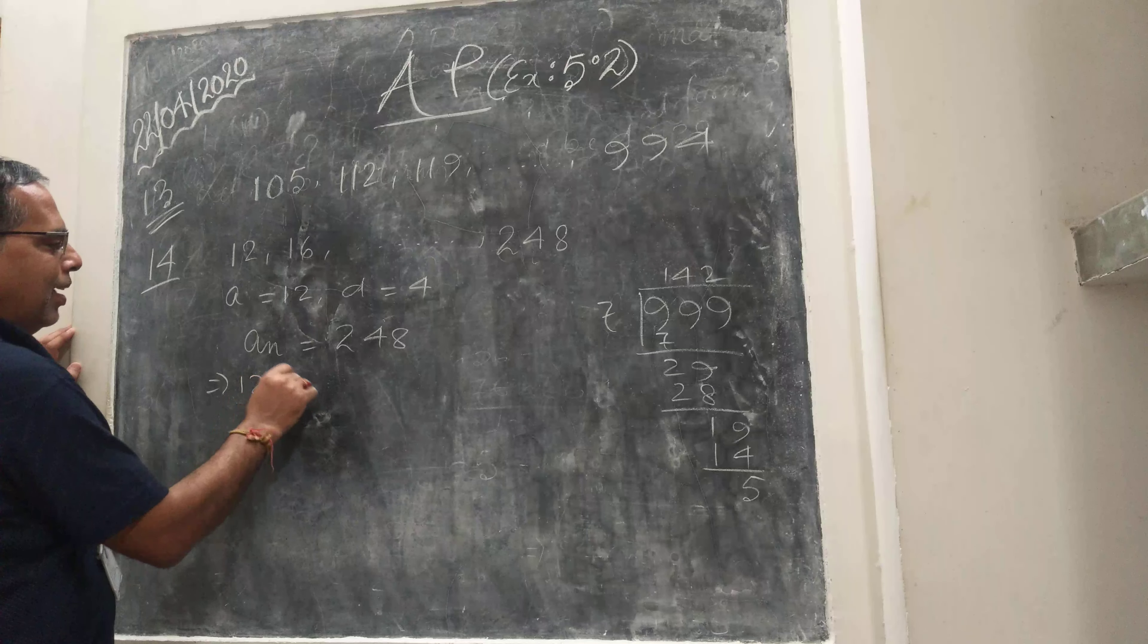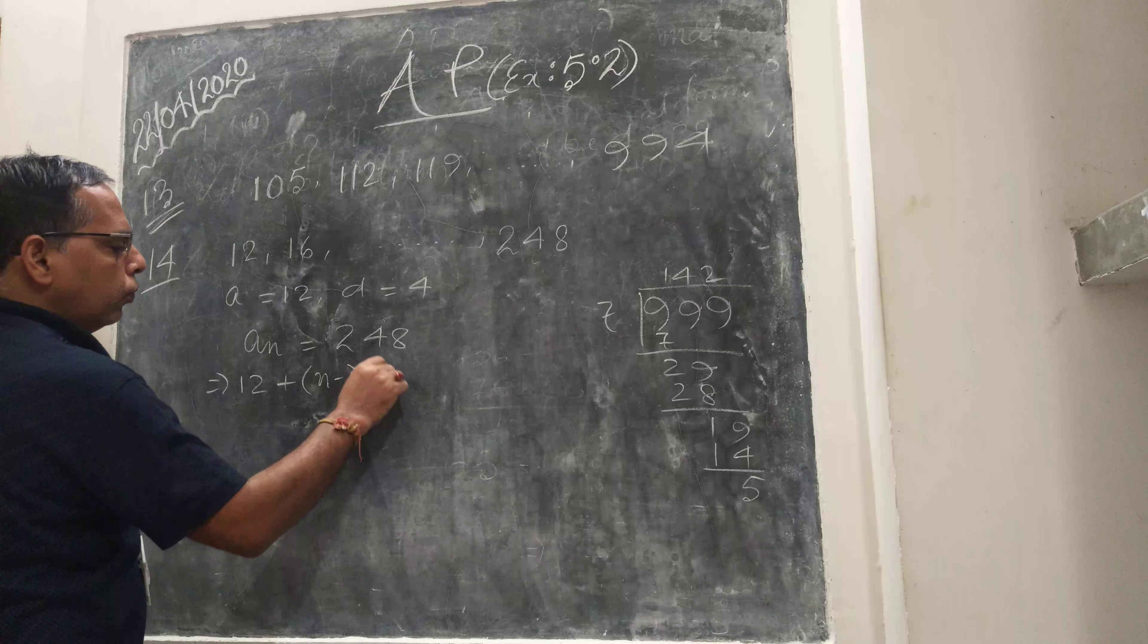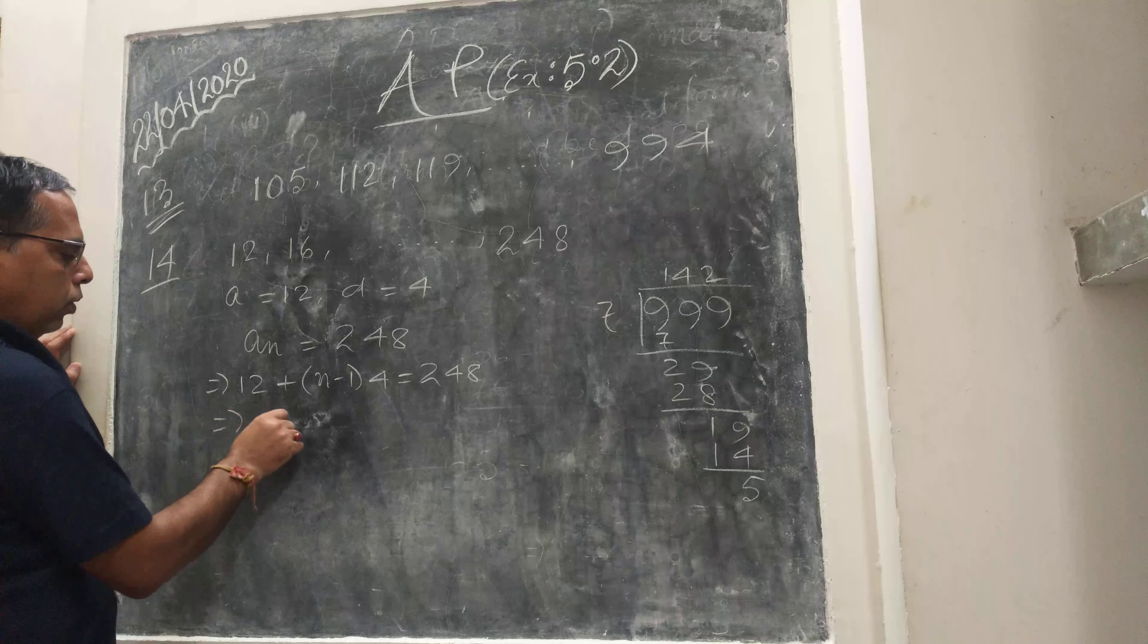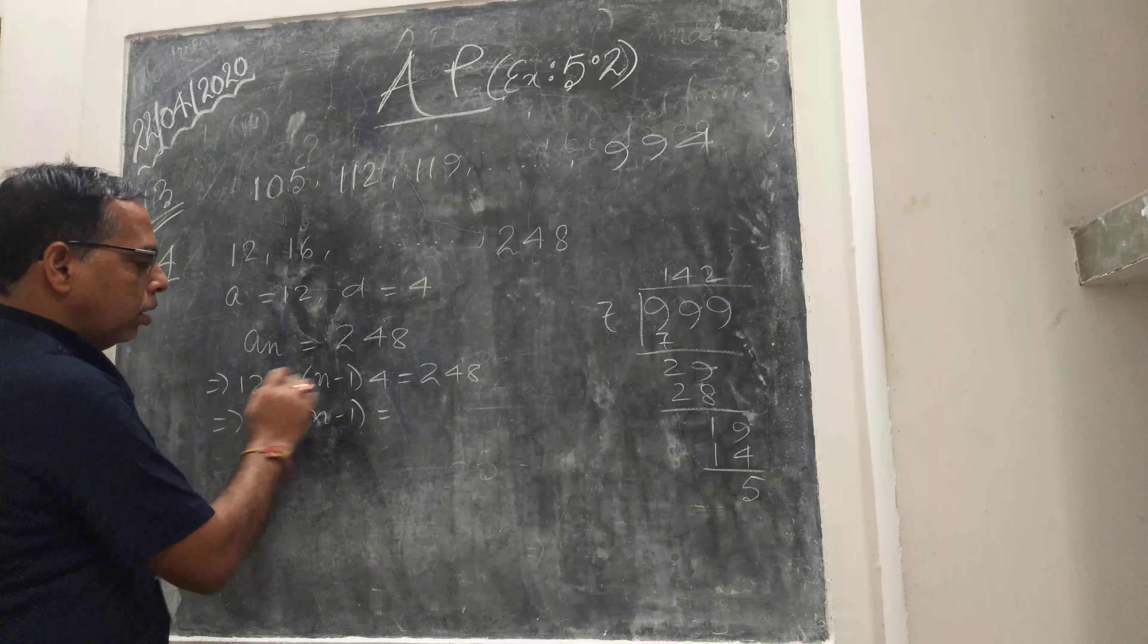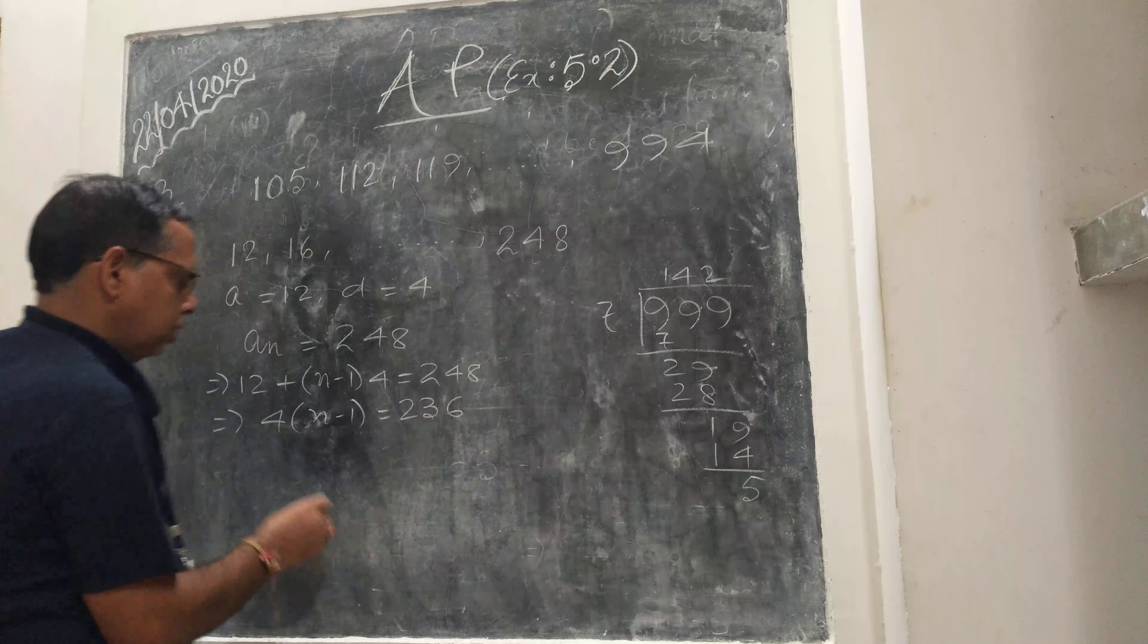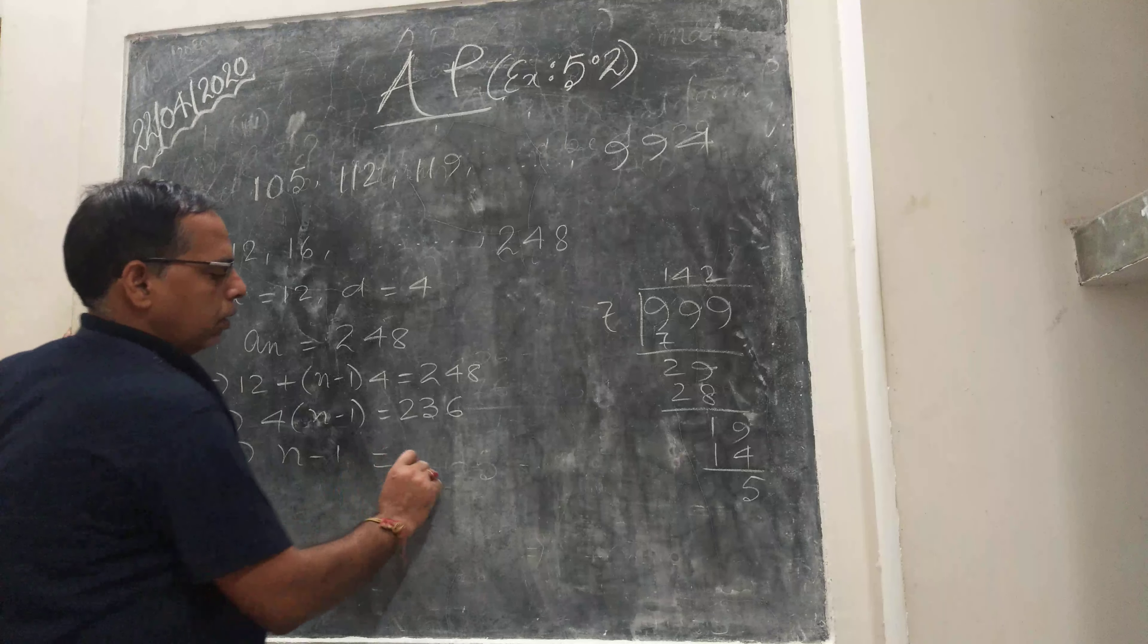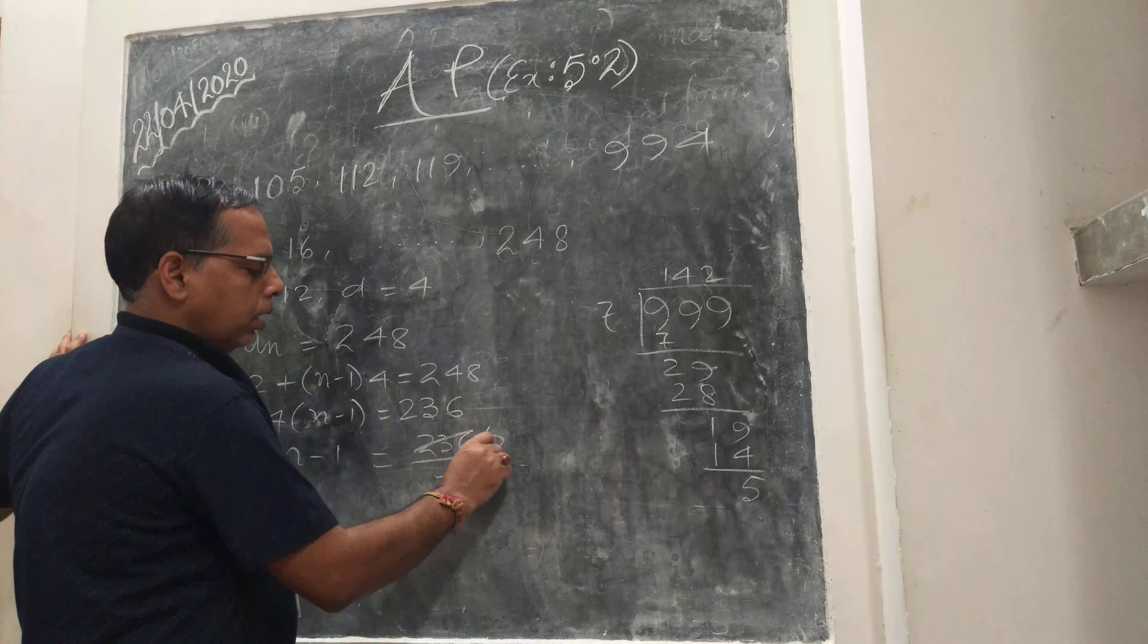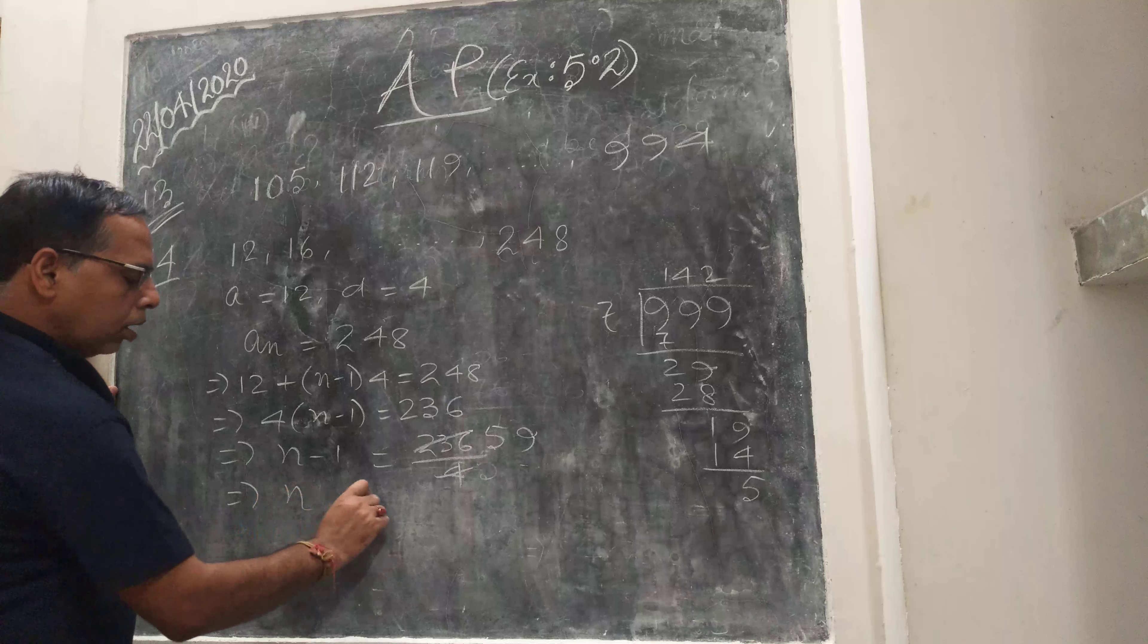Implies 12 plus (N minus 1) times 4 equals 248. Then 4(N minus 1) equals 236. Then N minus 1 equals 236 divided by 4, so 59. N equals 60.